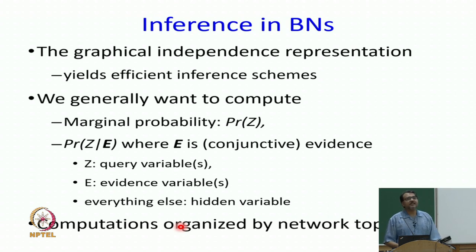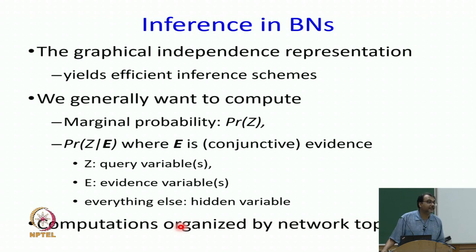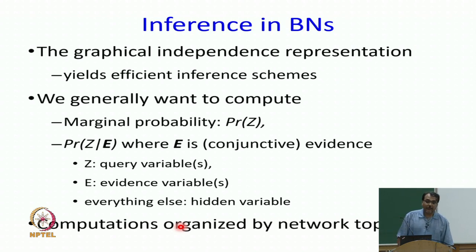Now what we are going to do is use the Bayesian network to think about what are the conditional independence assumptions it is making. After that we will start talking about how do we do inferences — for example, given that John has called and Mary has called, what is the probability that burglary actually happened? That is an inference question: we want to compute the probability of some variable given some other variable.